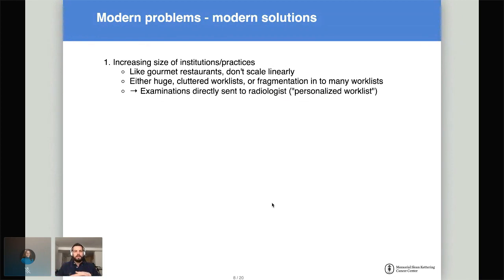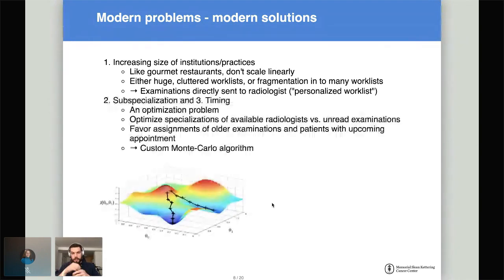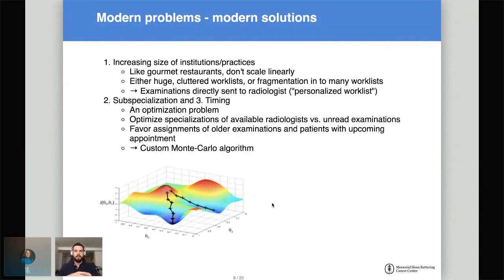Our solution is to use R to send examinations directly to a personalized queue for every radiologist. The second issue is sub-specialization. Back in the day, one radiologist would read a brain scan, a lung scan, or a broken leg. Today we have very sub-specialized radiology, as other fields have also moved into more sub-specialization.